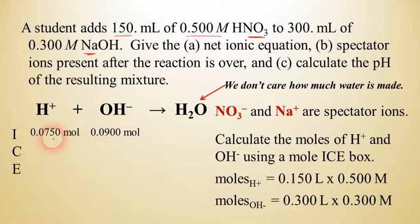You can see that this one right here, there's less of that. So it's going to run out first. So we can subtract 0.075 moles from both. Our acid is gone, has a zero mole value, and we're left with 0.015 moles of hydroxide.